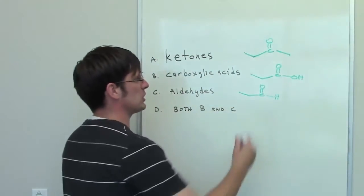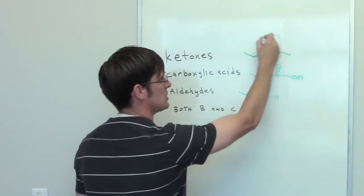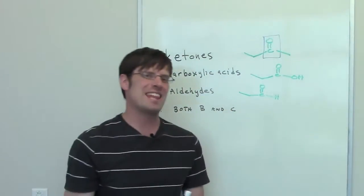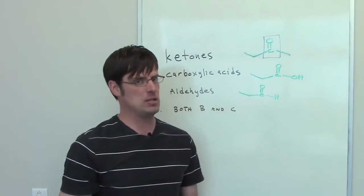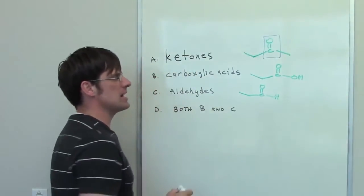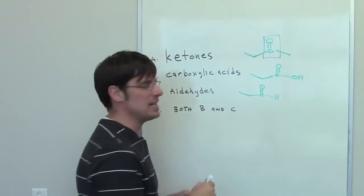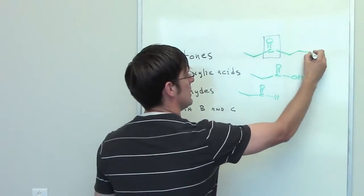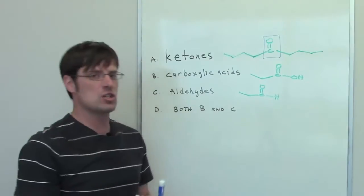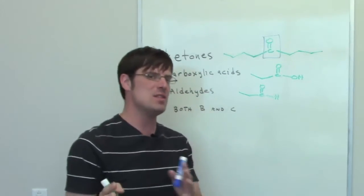does that functional group, this carbon-oxygen double bond, occur at the end of the carbon chain? You can see clearly that it does not. In fact, I can have ketones of various lengths, and in all of the cases, that carbon-oxygen double bond occurs somewhere in the middle.